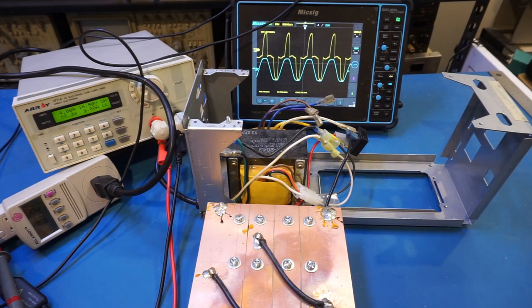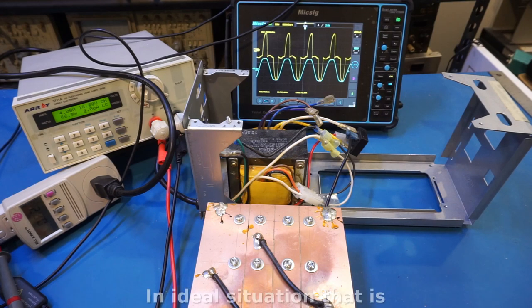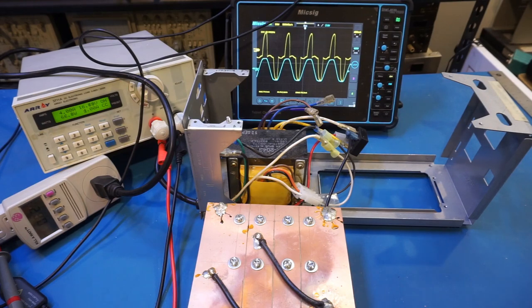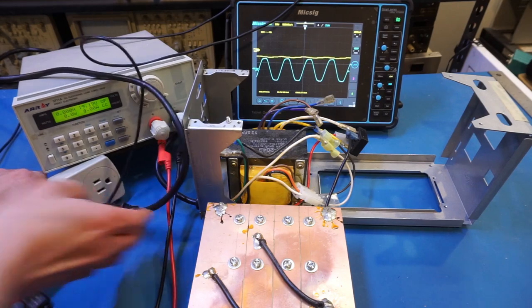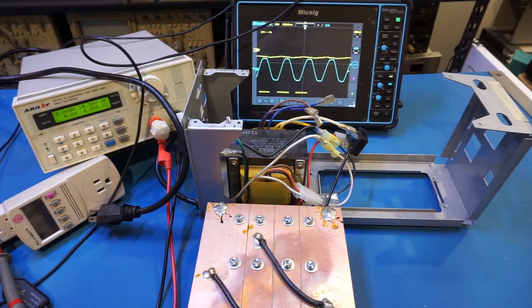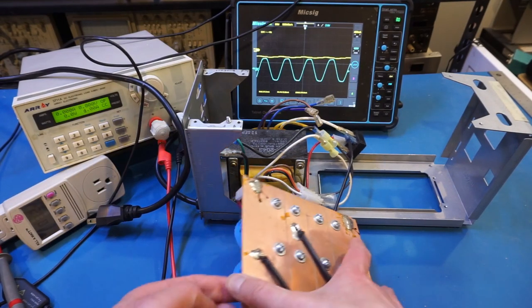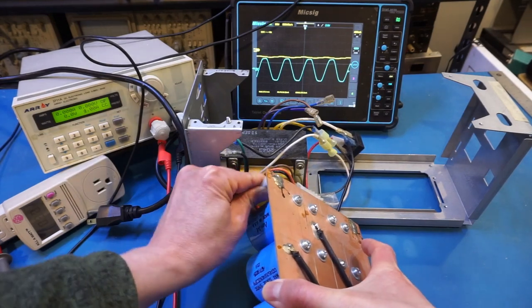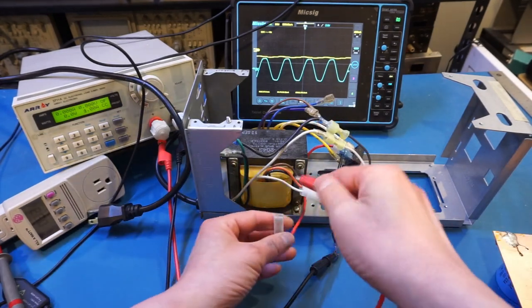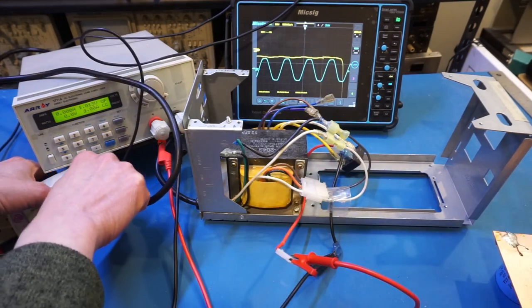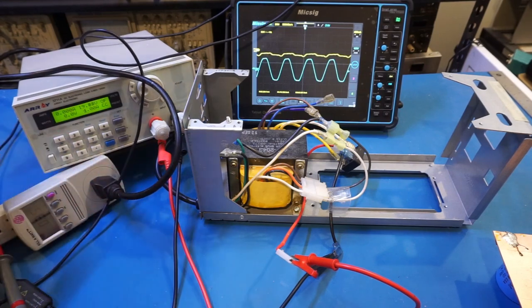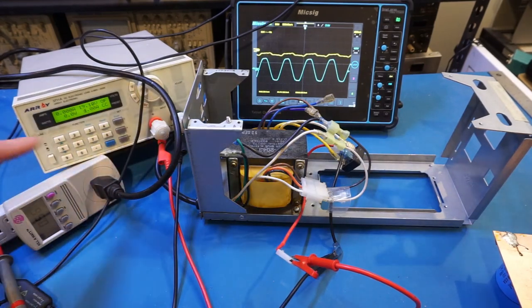As an extreme, if I remove the output capacitor altogether, the power factor should be a perfect one, given the resistive load. Let me demonstrate here. So let me turn the load off, unplug the power supply, and let me just remove the load and put the load right onto the secondary of the transformer. Plug back in the power supply here. Let me turn on the load.